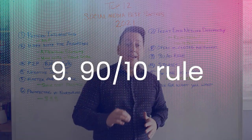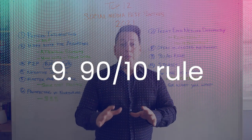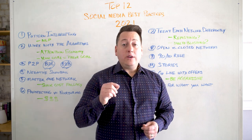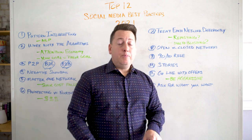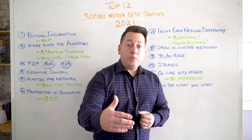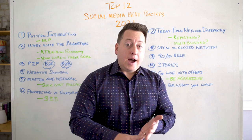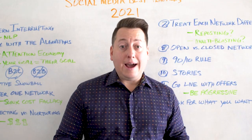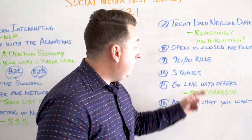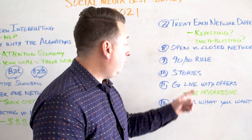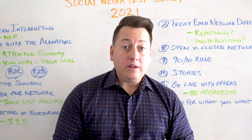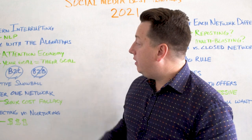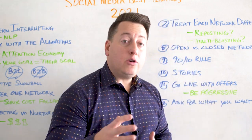Number nine: the 90-10 rule. I used to talk about this as the 80-20 rule, but things have changed. In 2021, you want 90% of the content you put out to be engaging and non-promotional. The biggest reason people tune out or turn off social media is because of promotional content, so no more than 10% of your content should be promotional. This comes back to the attention economy and working with the algorithms.